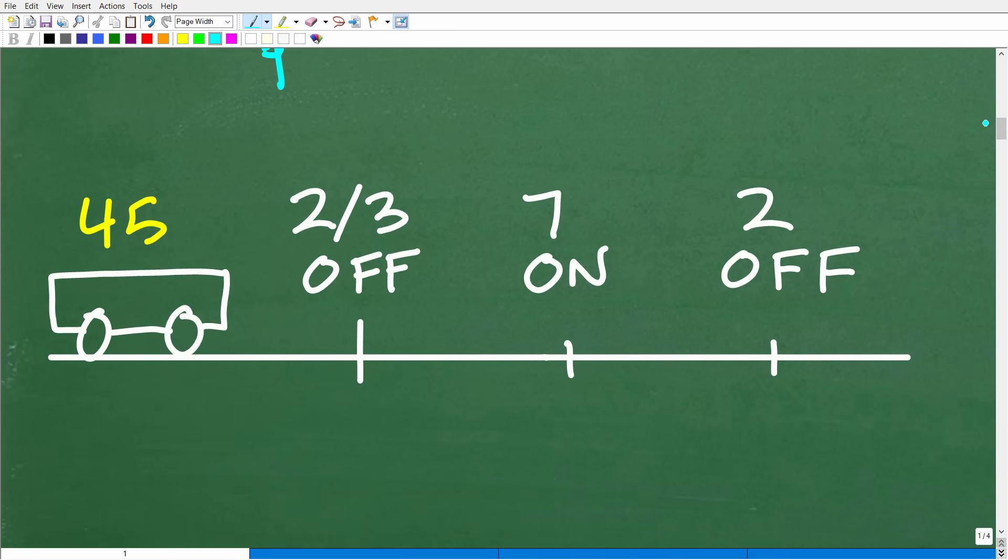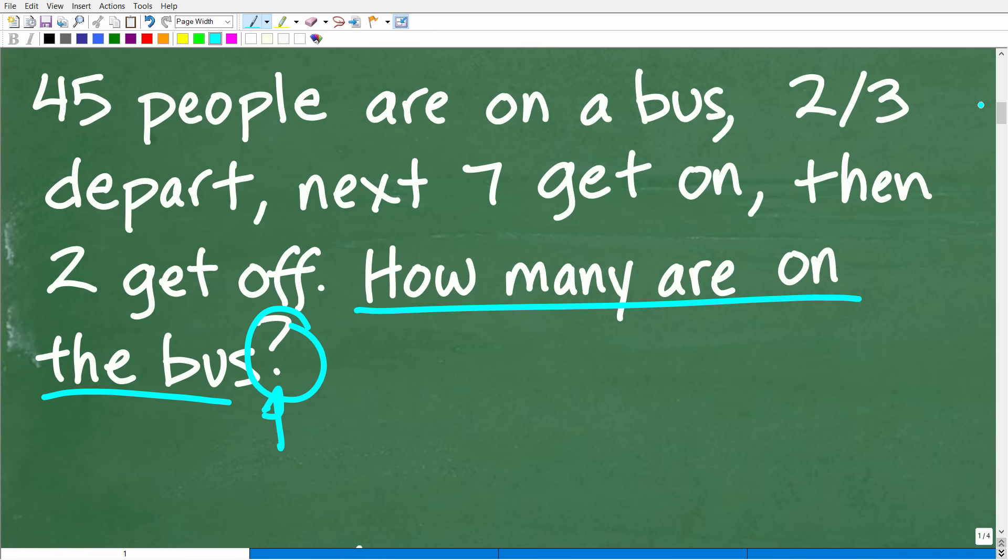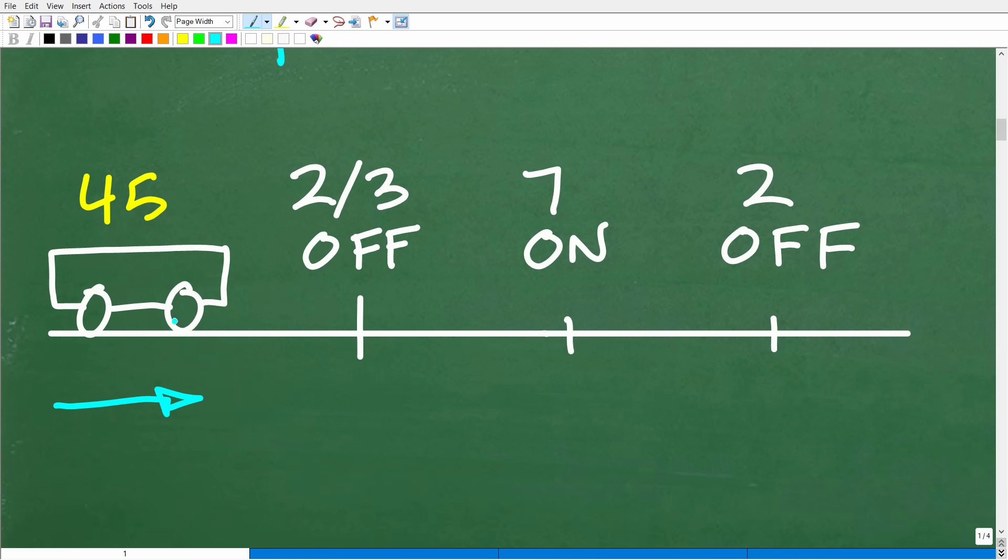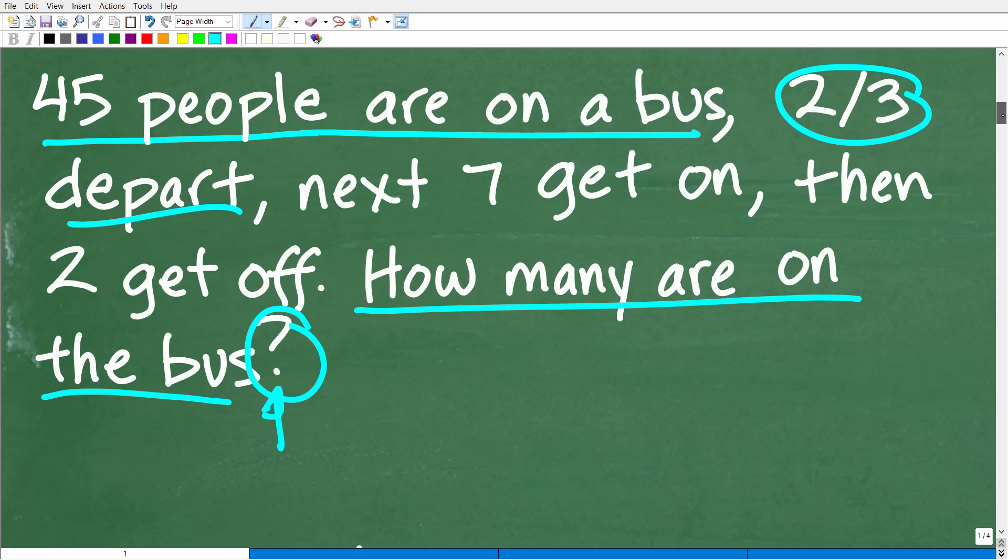So we have this bus going down the road here, and it has 45 people on it, right? So that's what the problem says. We've got 45 people that are on a bus. That's the starting point. So then two-thirds of those folks depart. Okay, so here's our bus, has 45 people. Two-thirds of these people are going to get off the bus. Then what happens next?